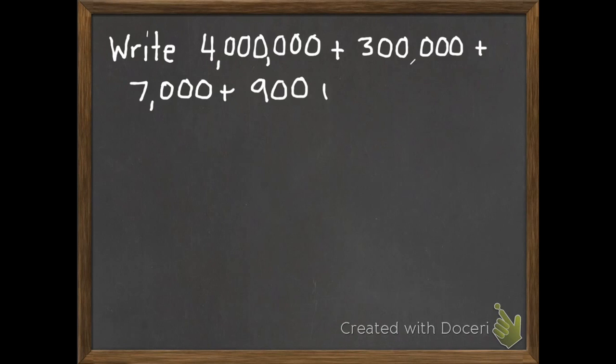Here's the second problem that we'll check together. I want you to write 4,000,000 plus 300,000 plus 7,000 plus 900 plus 80 plus 1 in standard form. Once again, pause it and then check your work when you're done.